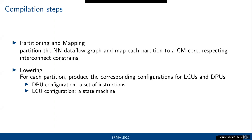The second phase is called lowering: for each partition, we produce the corresponding configurations for the control units and the digital units. The configuration for the digital unit is a set of instructions, and for the control unit it is a state machine.